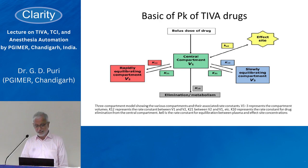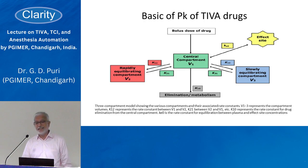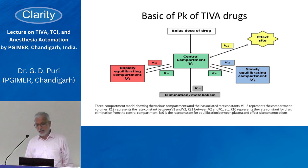The rate at which drug moves into the periphery keeps decreasing, because as those tissues become saturated, the amount leaving the central compartment to the peripheral compartment keeps decreasing — whether it is rapidly accumulating or slowly accumulating.